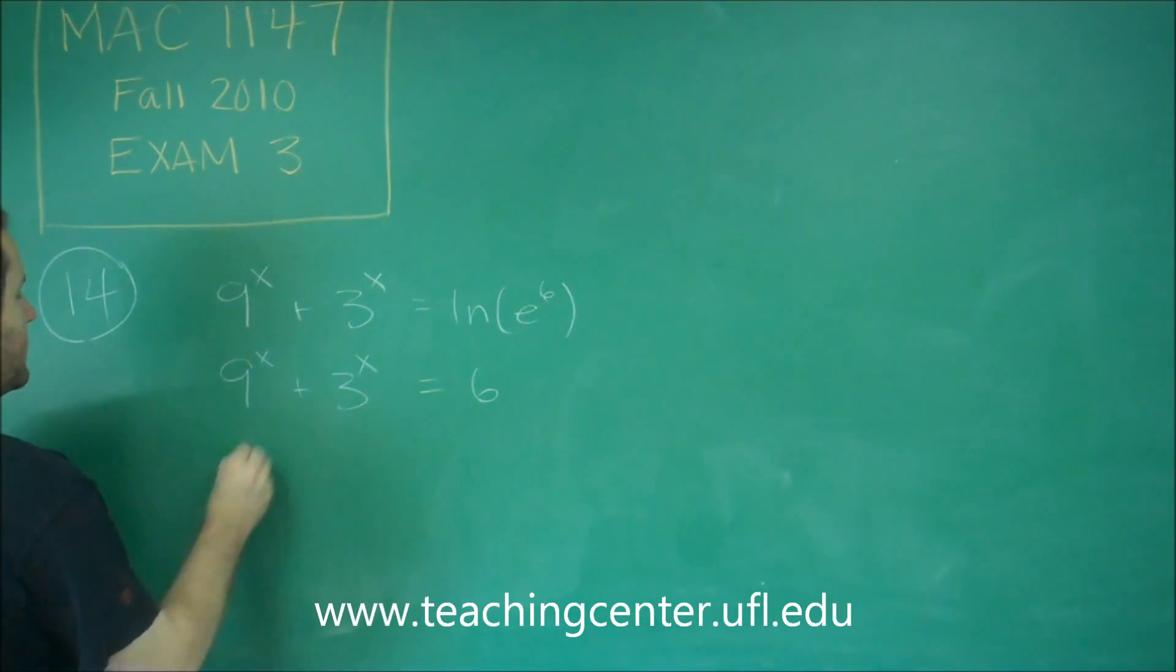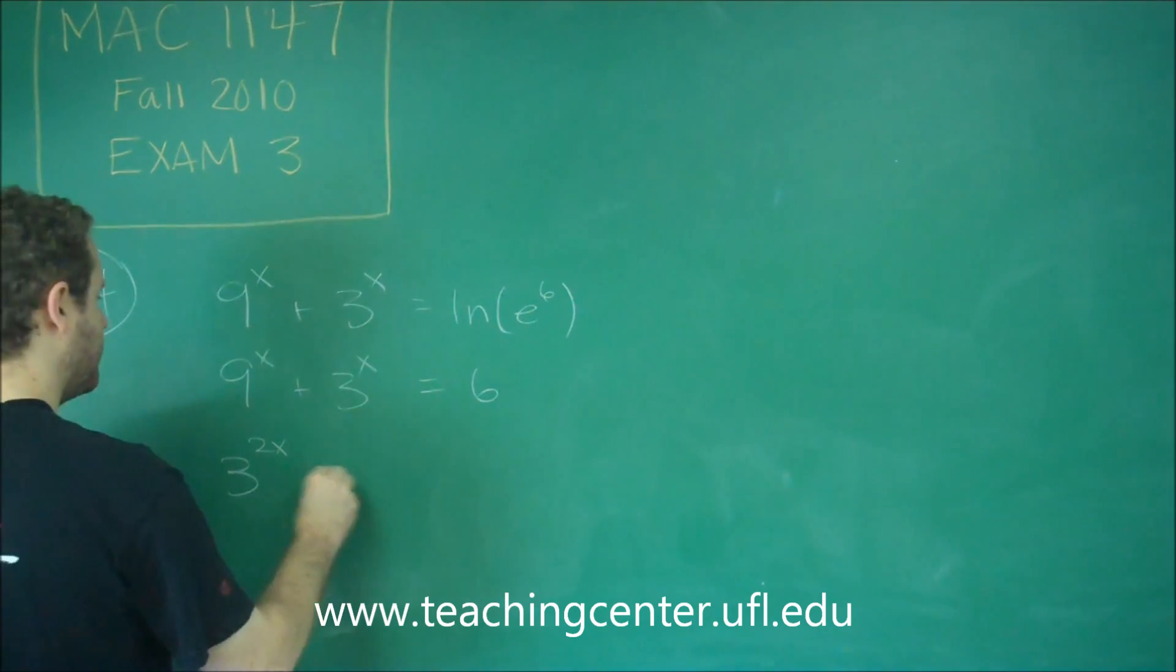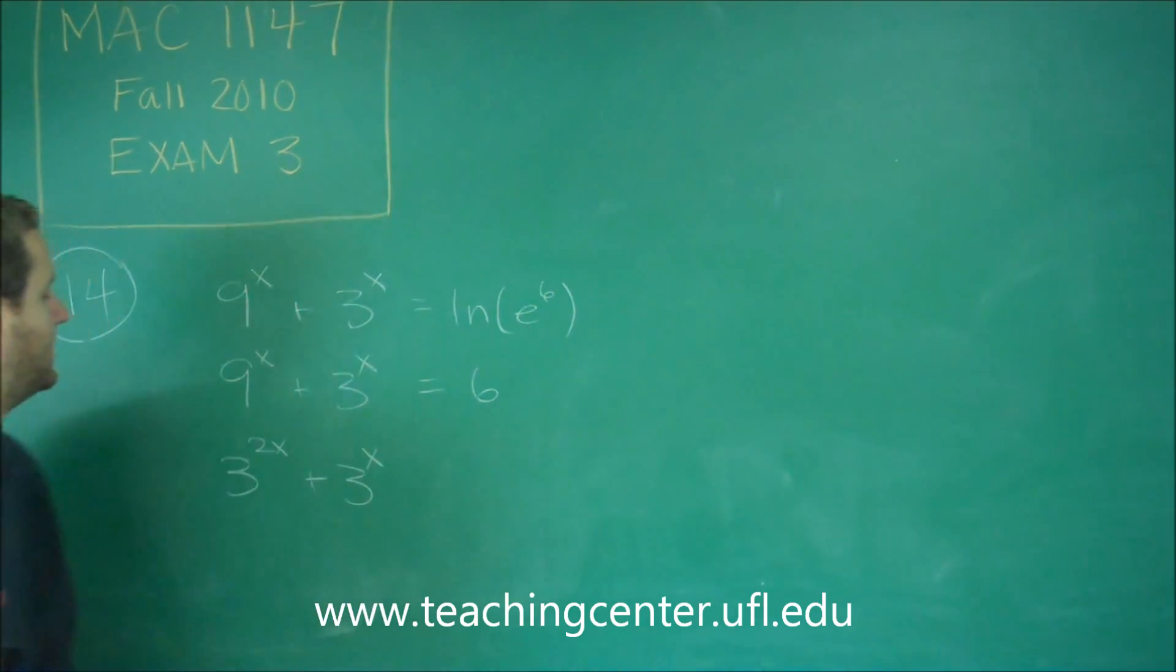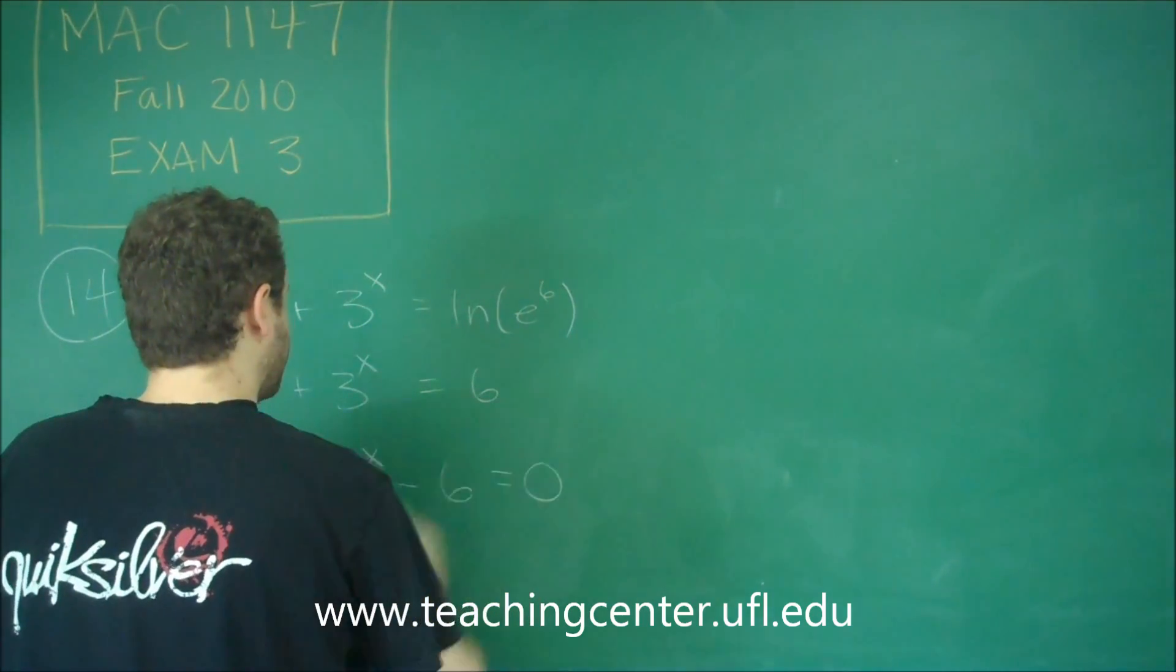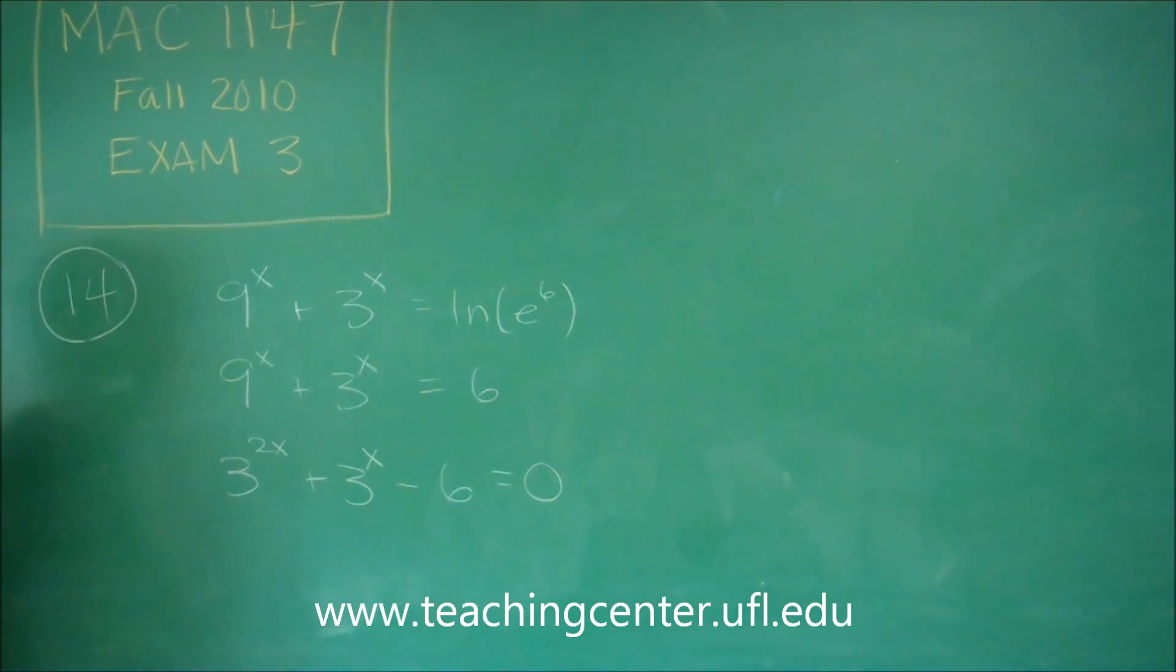So this is 3^(2x) + 3^x. And in general it's good for equations to equal 0. So let's subtract that over and get equal 0 there.